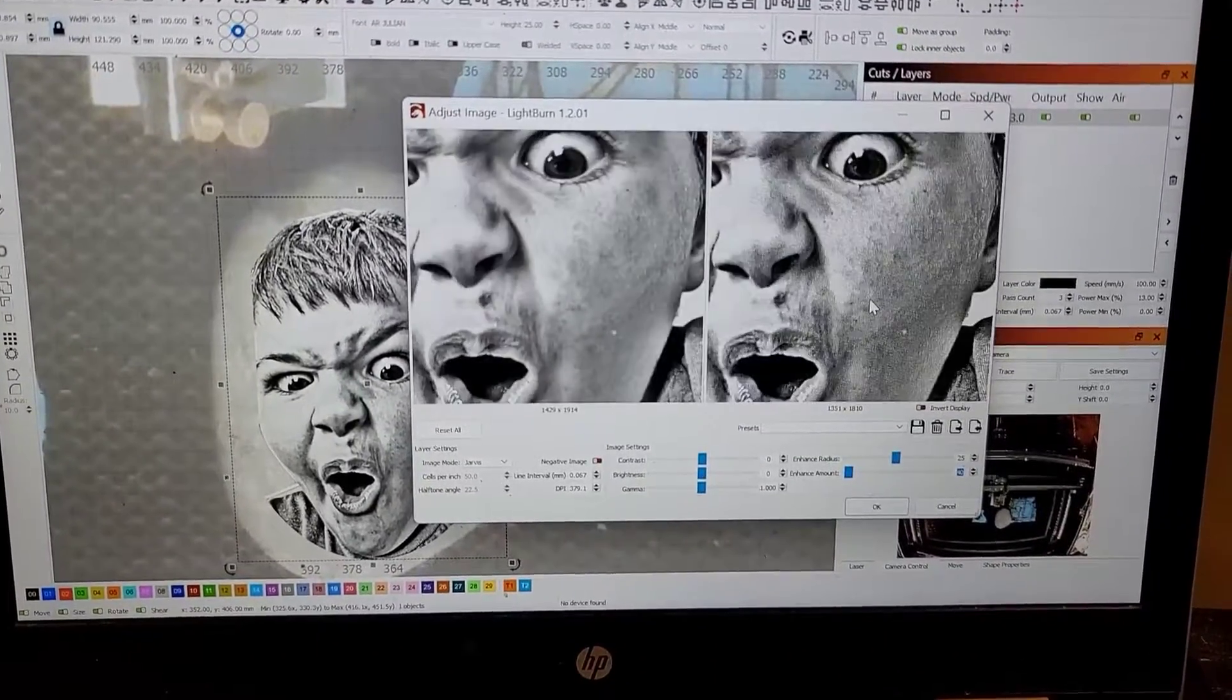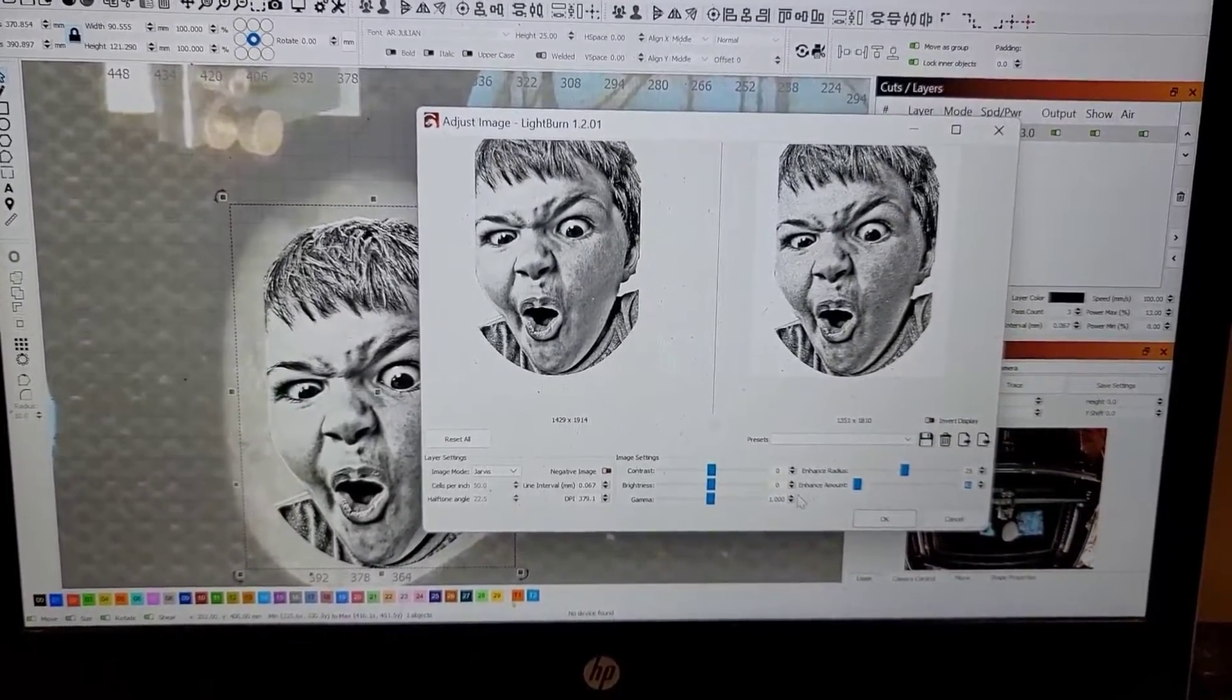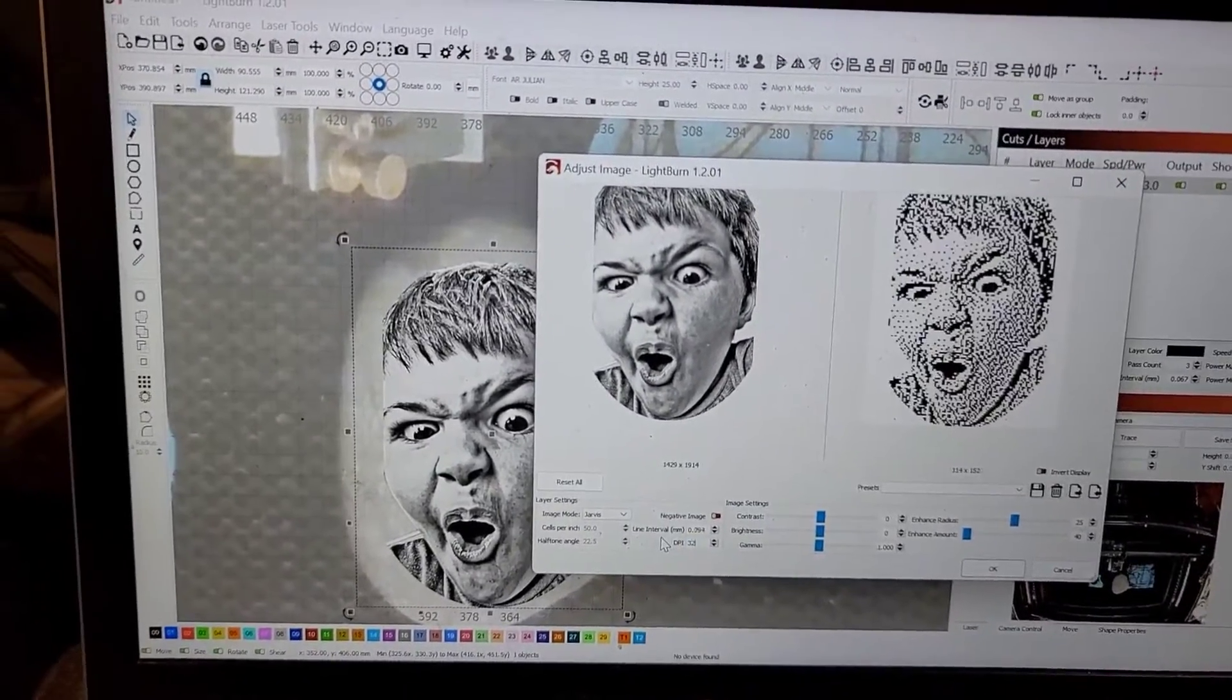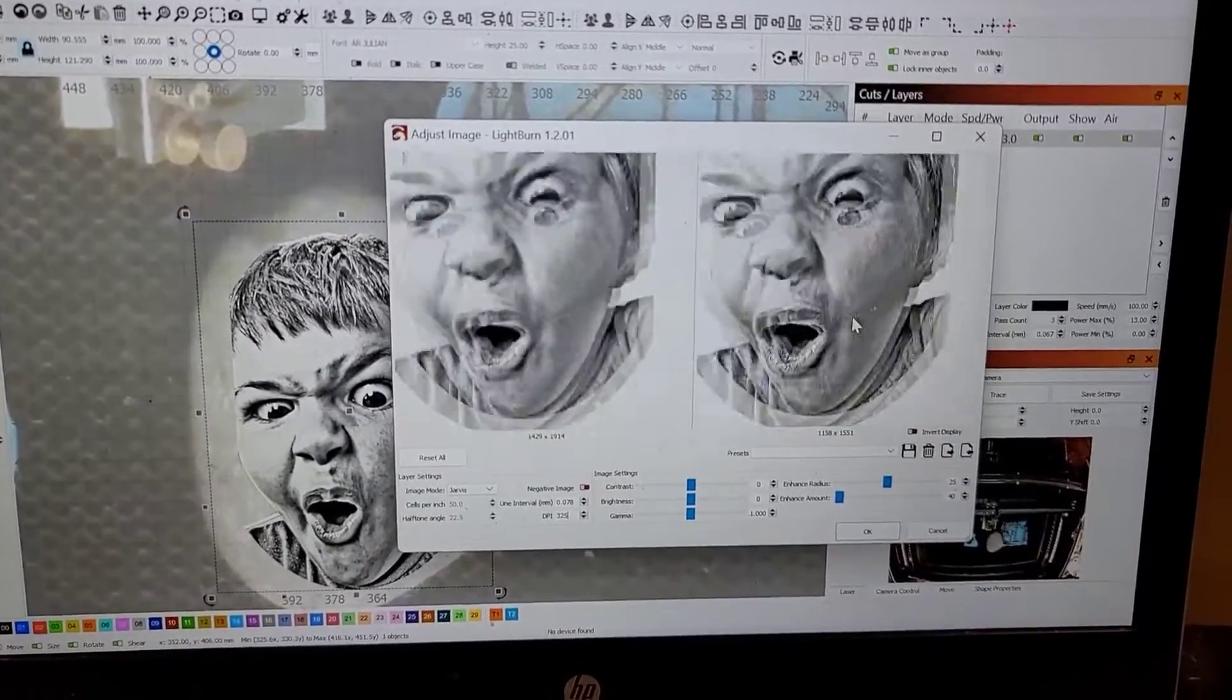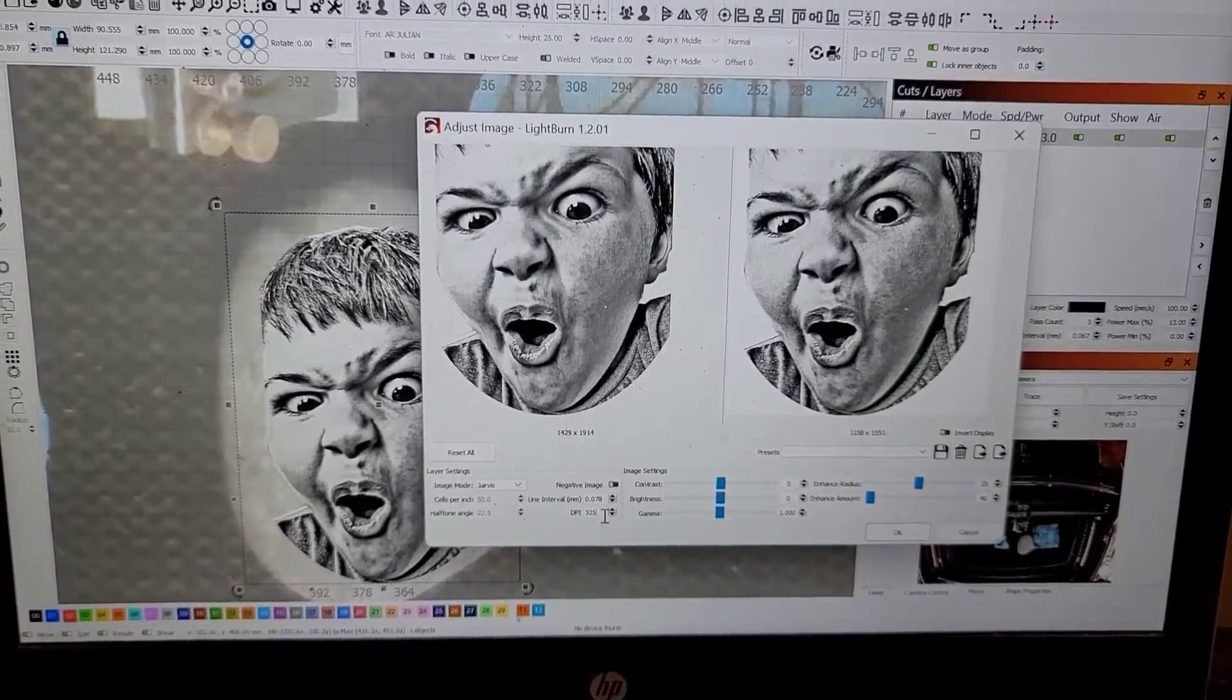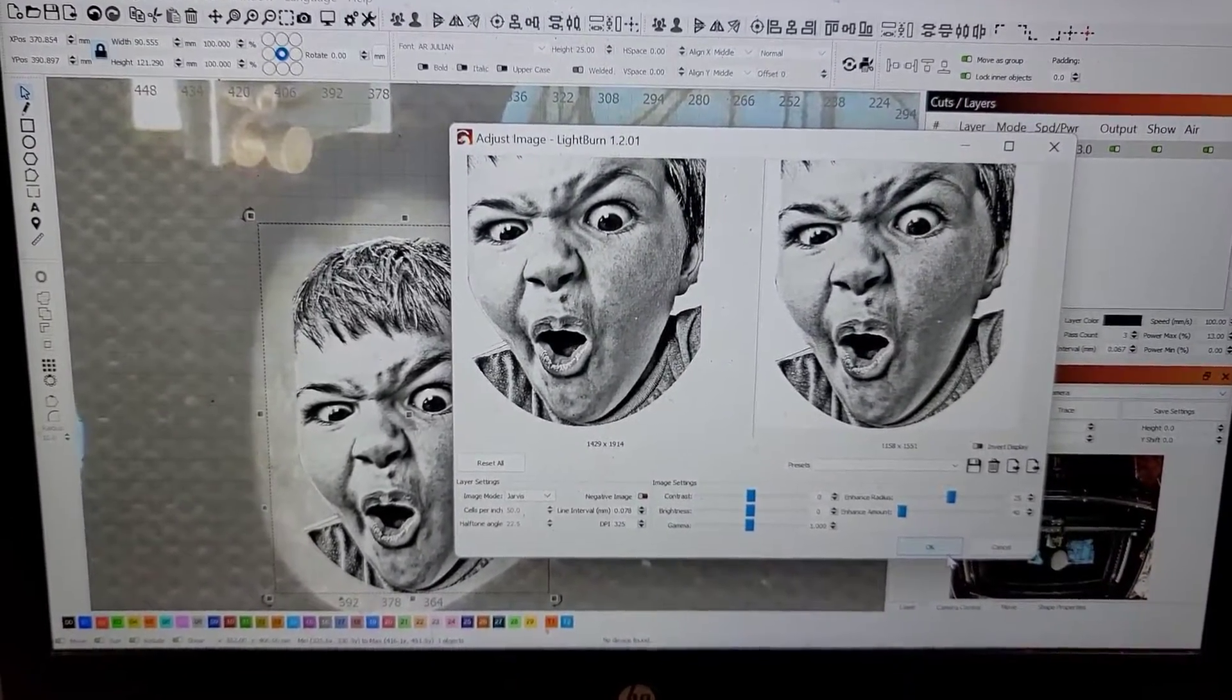Look at that and see how your dot pattern looks. That doesn't look like a bad one to me. We do have, we saved it as 325 DPI resolution in Photoshop when we did our little edit here. I'm going to go ahead and make that match the DPI output on Light Burn and that'll just make the dots one to one and they should be, it should make a really good image.